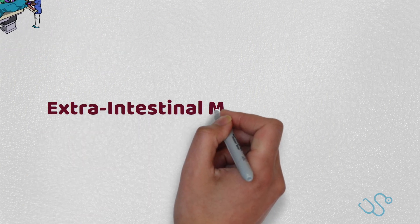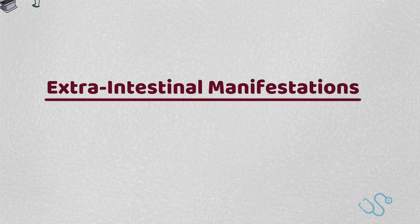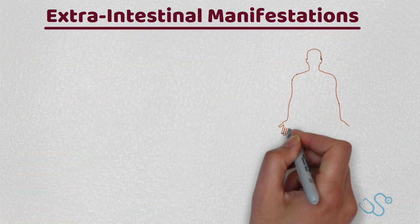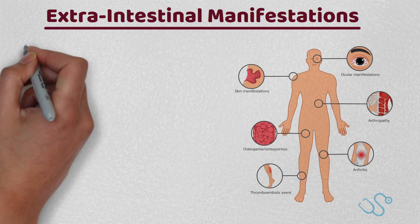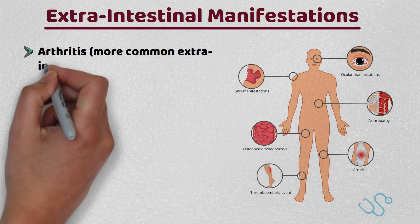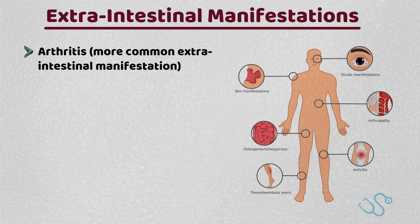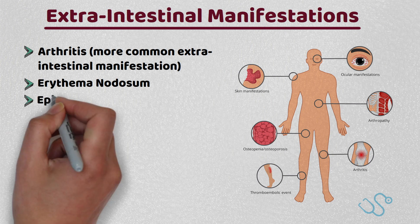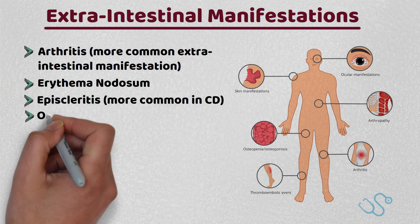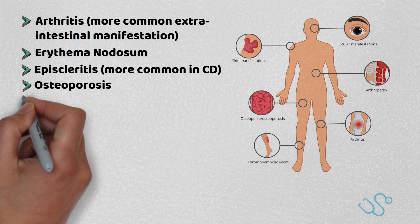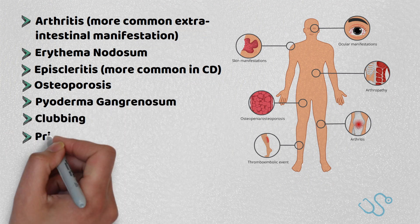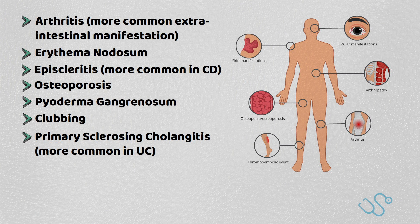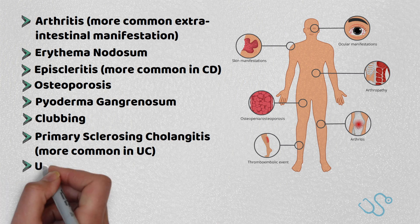One common exam question you will be asked about is extra-intestinal manifestations of IBD. The first to mention is arthritis, which is the most common extra-intestinal manifestation. You could also see erythema nodosum, episcleritis which is more common in Crohn's, osteoporosis, pyoderma gangrenosum, clubbing, primary sclerosing cholangitis which is more common in UC, and uveitis, again more common in UC.